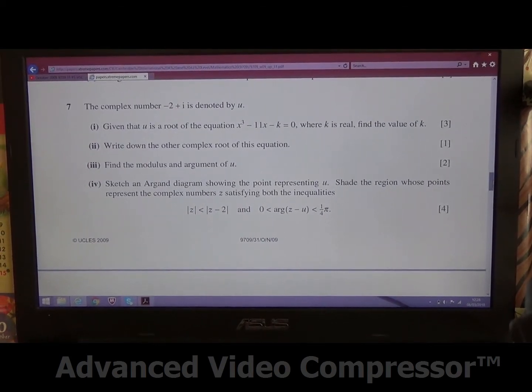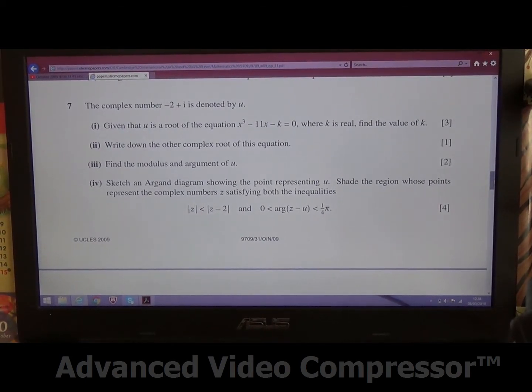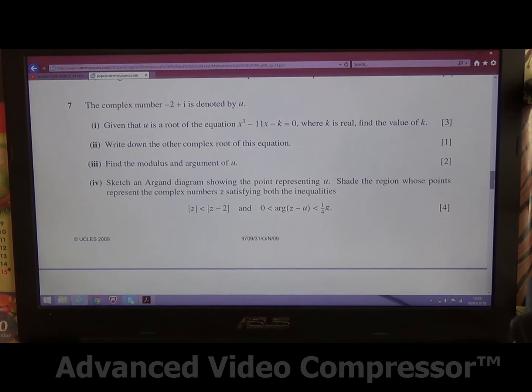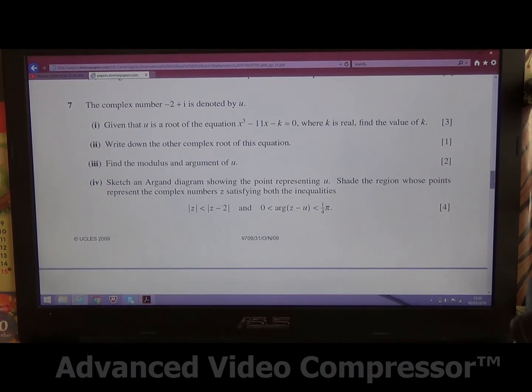Hi, question number 7. The complex number minus 2 plus i is denoted by u. First part, given that u is a root of the equation x cubed minus 11x minus k equals 0, where k is real, find the value of k.